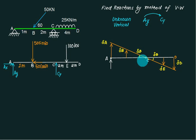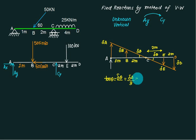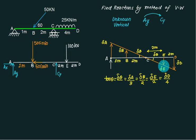Mark this angle equal to delta E and mark the distances also. This distance is 2 meters, this one is point B, and this one is 1 meter. At E, the distance from here to here is 2 meters. Now, tan theta equals delta A by 3, delta B by 2, and delta D by 4.